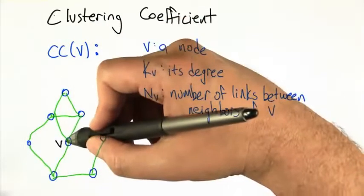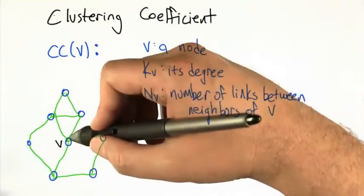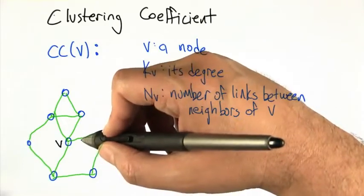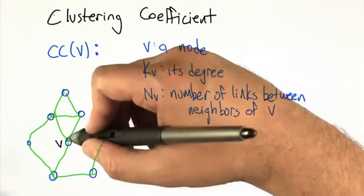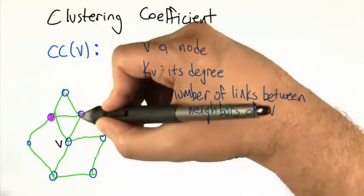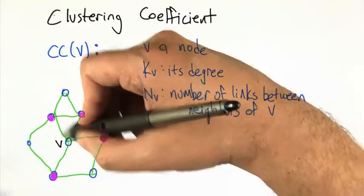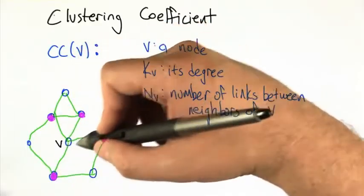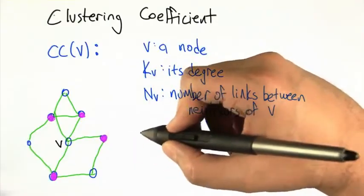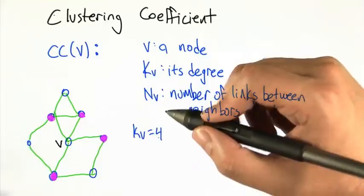Let's look at this example graph to ground out some of these concepts. Here we've got a graph — let's call this node v. Let's take a look at the neighbors of v, those are the nodes that are directly connected to v in the graph. We've got this one, and this one, and this one, and this one. So the number of those neighbors is exactly the degree of v, which in this case is 4.